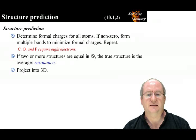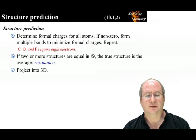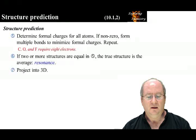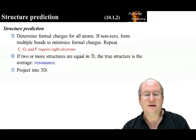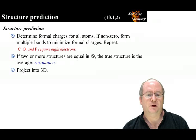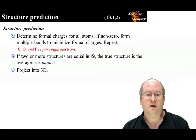Observe that nowhere is the word 'octet.' In step 5, there is a caveat that only carbon, oxygen, and fluorine require 8 electrons, but all other elements are stable with more or less than 8 electrons. In step 6, if two or more structures in step 5 are equal, the true structure is the average resonance. Steps 1 to 6 are the Lewis model. Step 7 is the VSEPR model — project into 3D. VSEPR is a small but critical addition to the Lewis model. And now we are going to apply this procedure to three different entities.